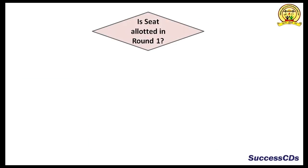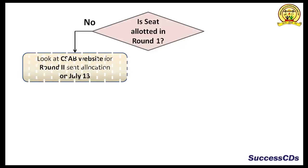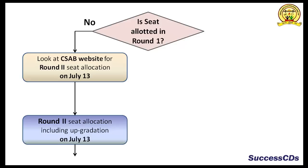Is your seat allotted in Round 1? If no, please visit the CSAB website for Round 2 seat allocation, which will be done on July 13th. Do remember, the display of seat allocation results for the second round, including seat upgradation of first round provisionally admitted candidates, will be done on 13th of July.